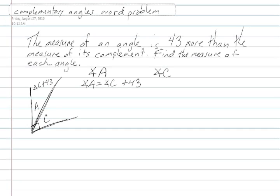So we know then that since they're complementary, they add up to 90 degrees. So angle A plus angle C is equal to 90 because they're complementary angles.